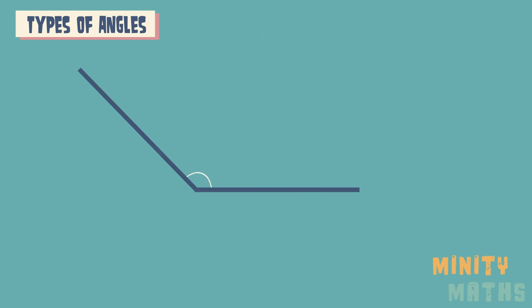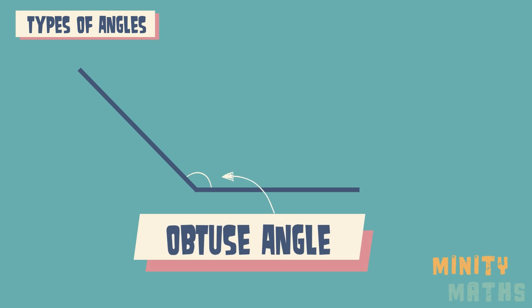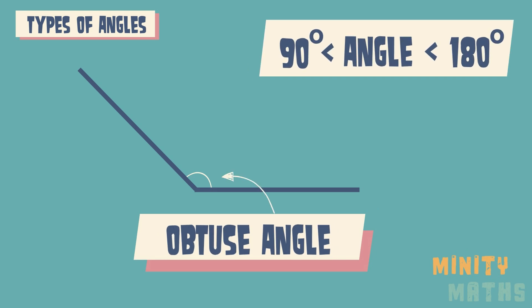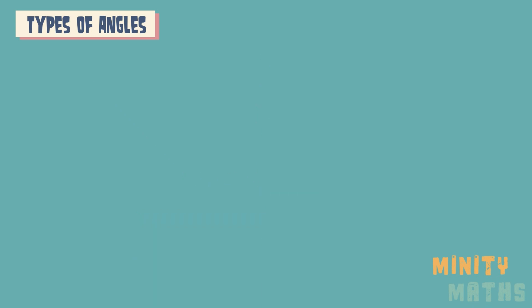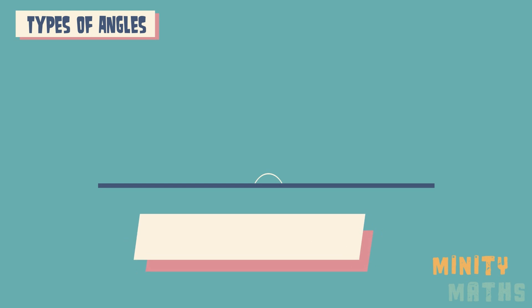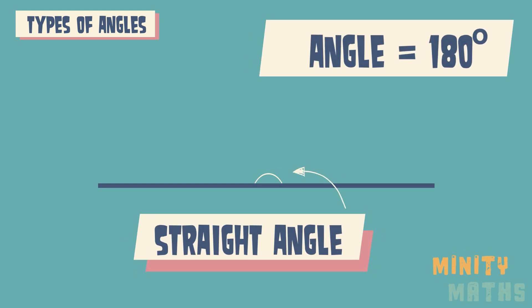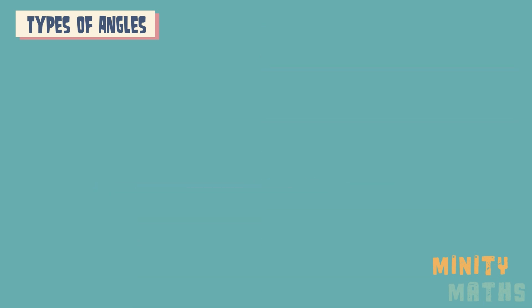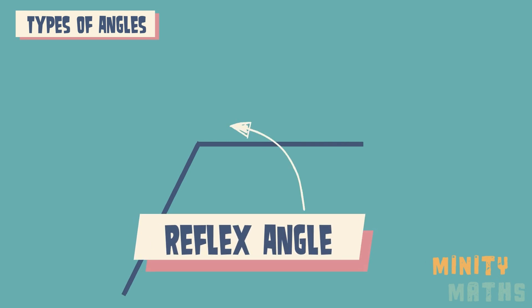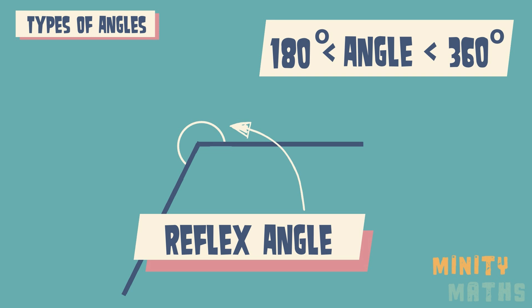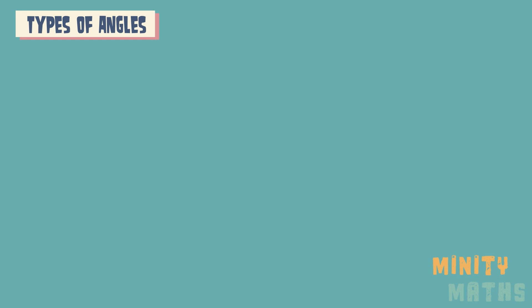An obtuse angle is an angle greater than 90 degrees and less than 180 degrees. A straight angle is equal to 180 degrees and lies upon a straight line. A reflex angle is greater than 180 degrees but less than 360 degrees. A full rotation measures exactly 360 degrees.